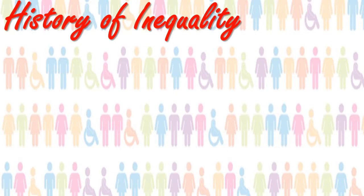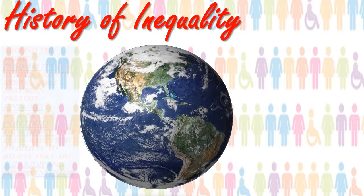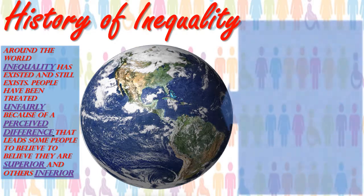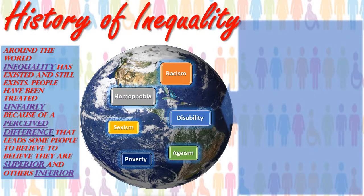The history of equality in the world is not particularly good. Around the world, inequality has existed and still exists. People have been treated unfairly because of a perceived difference that leads some to believe they are superior and others inferior. Key areas where inequality has happened include racism, homophobia, disability, sexism, ageism and poverty.